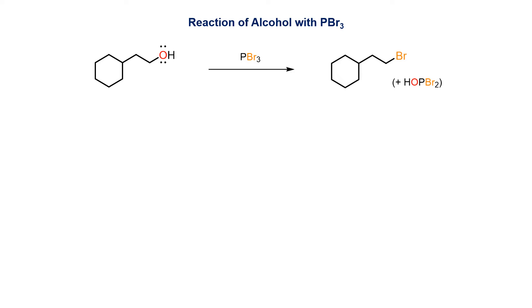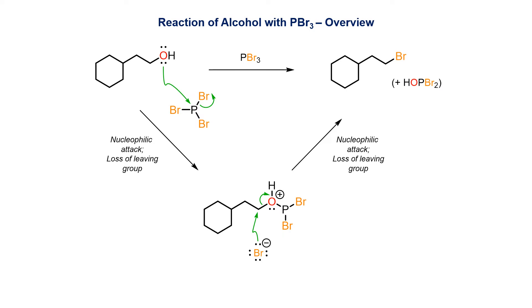Phosphorus tribromide is a useful reagent for converting alcohols into bromides. This avoids having to use HBr, which is often incompatible with other functional groups within a molecule. The nucleophilic alcohol attacks the electrophilic phosphorus and displaces a bromide ion as a leaving group. The resultant alkoxonium ion then undergoes an SN2 reaction with bromide to give the bromoalkane. Since PBr3 contains three bromides, this reaction is capable of occurring with three equivalents of alcohol via the same mechanism.